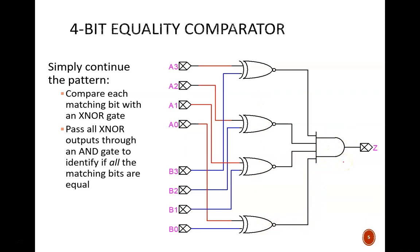Let's see how this works with an example. We'll have input A be decimal 6 or binary 0 1 1 0, and input B be decimal 7 or binary 0 1 1 1. Bit position 3 is a 0 for both inputs. Thus, the top XNOR gate produces a high.